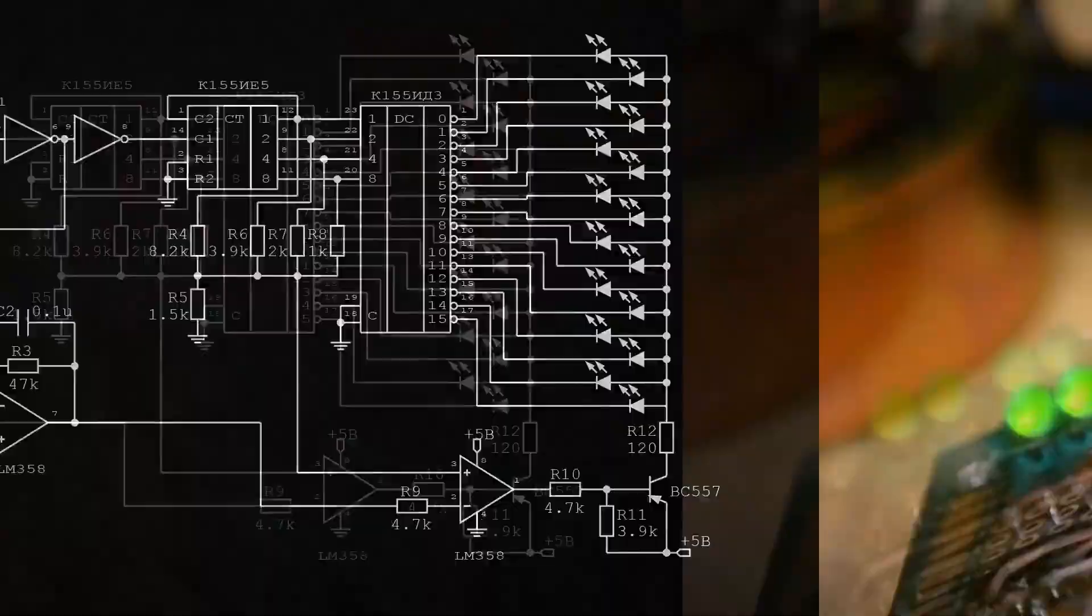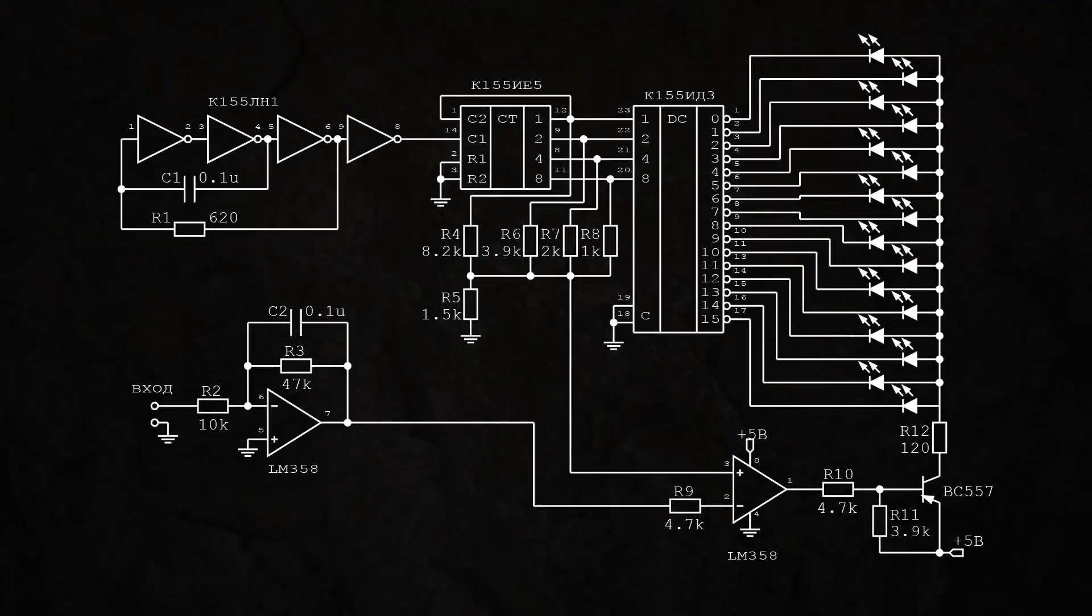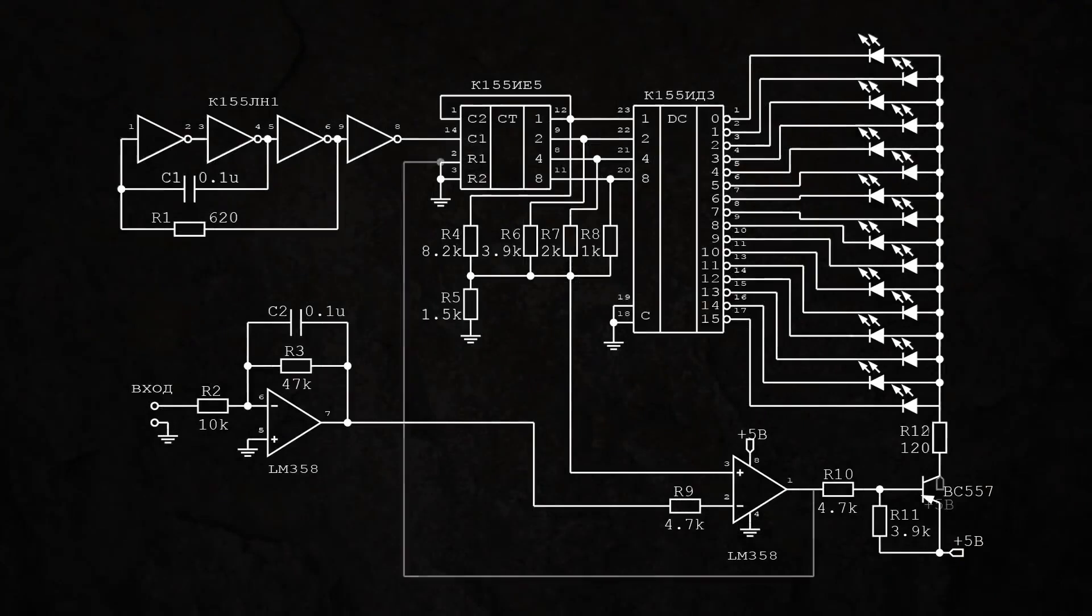While filming this video, I came up with an idea on how to simplify the circuit. You can exclude the transistor and two resistors from the circuit, and feed the output from the operational amplifier to the reset input of the counter.